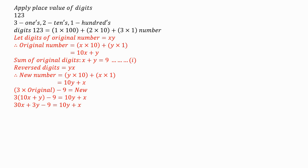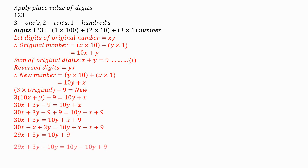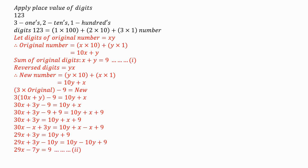We start by adding 9 to both sides of the equation: 30X plus 3Y equals 10Y plus X plus 9. Then we subtract X from both sides, giving 29X plus 3Y equals 10Y plus 9. Then we subtract 10Y from both sides, resulting in 29X minus 7Y equals 9. We label that as Equation 2.